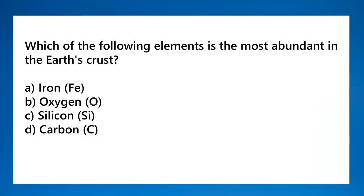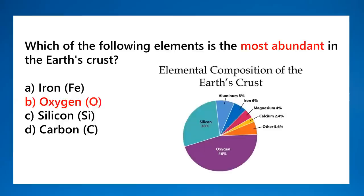Which element is most abundant in the Earth's crust? The answer is oxygen, followed by silicon. If oxygen is not in the options, we can answer silicon. If the question asks about mineral combinations, silicon and oxygen together form silicates, which is also an acceptable answer. Oxygen and silicon are the two most abundant elements in the Earth's crust, with oxygen being the most abundant.